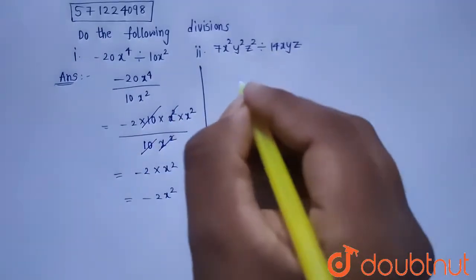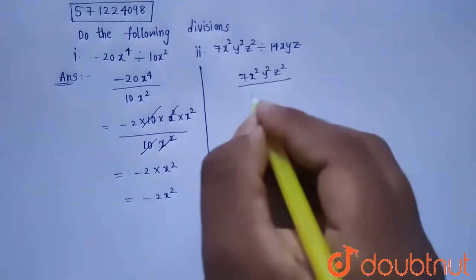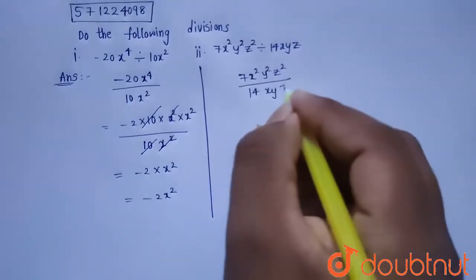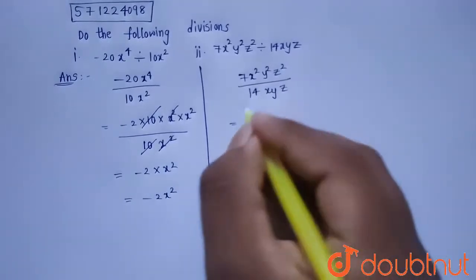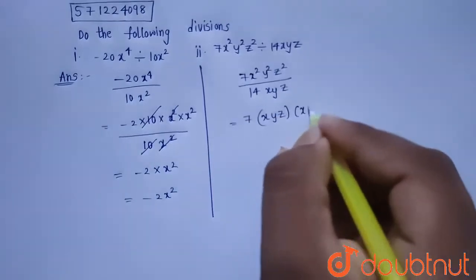And similarly for the second sum, 7 x square y square z square divided by 14 x y z. Now from this, it can be written as 7 into x y z into x y z.